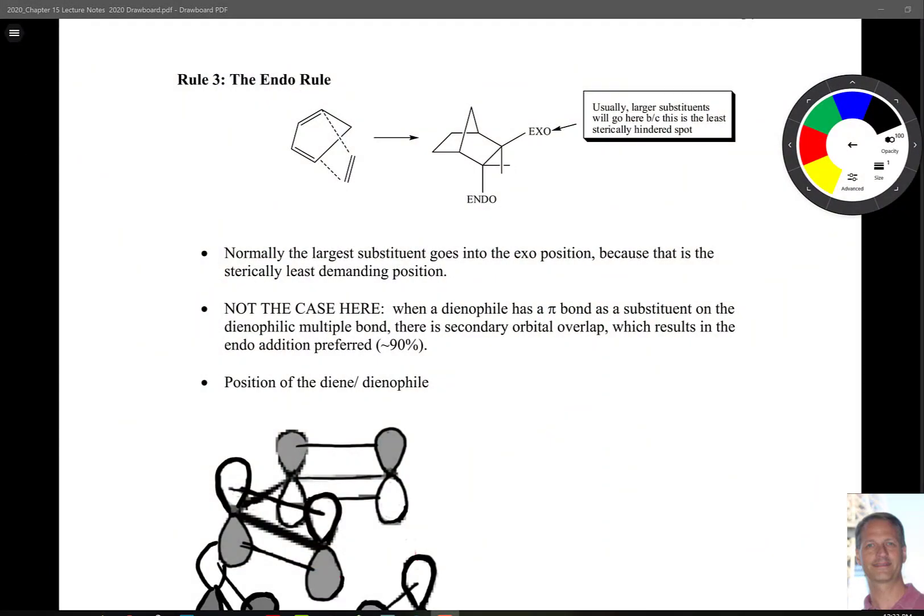Now, the third rule we have to consider when talking about Diels-Alder is called the Endo Rule. So let's first describe what endo means. When we do a cyclo addition like the following Diels-Alder, we get this bicyclic structure that has substituents either pointing down. These down positions are called the endo positions. This is also endo. And then this top position here is your exo position. So this is exo and exo.